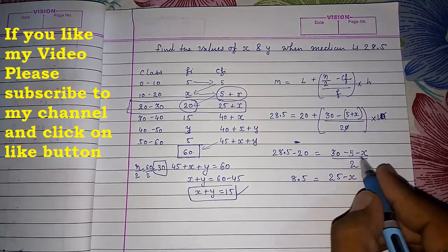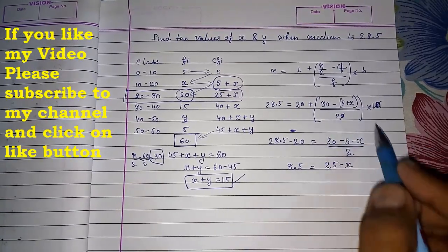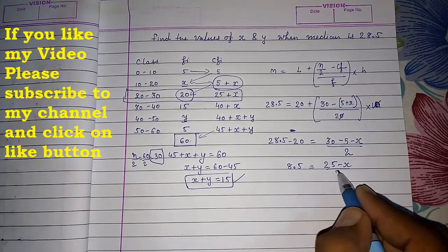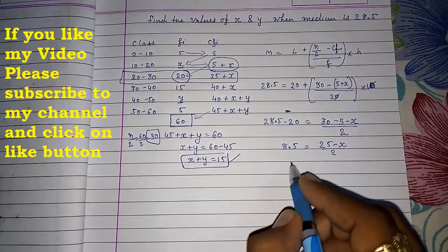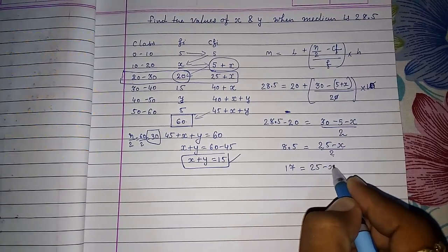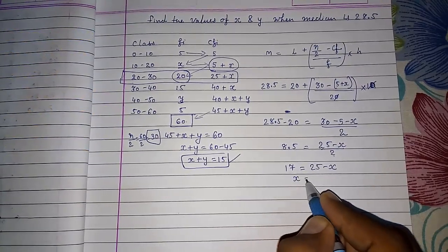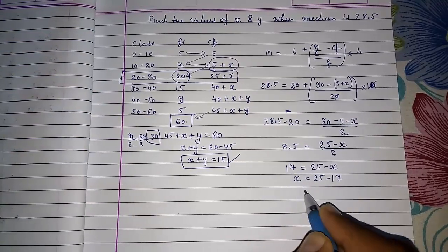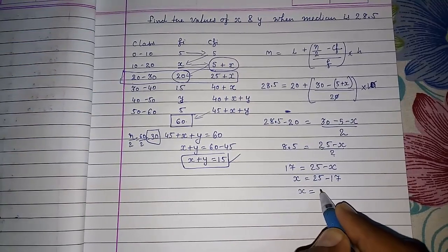Generally students are making mistakes here. They are not keeping this minus sign here by 2. So this 2 will go here. It will be 17, 25 minus X.